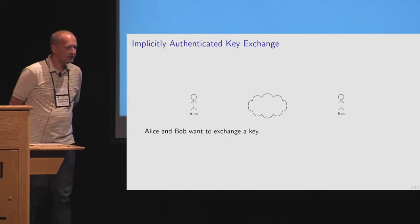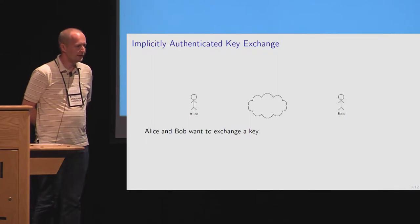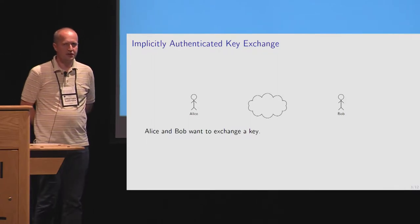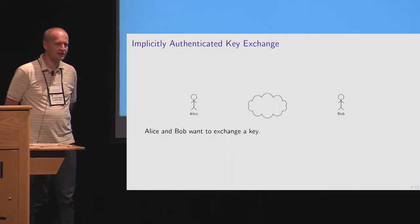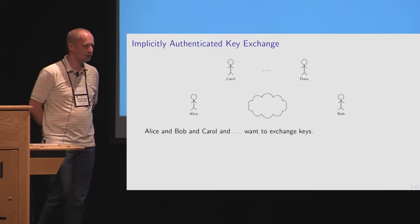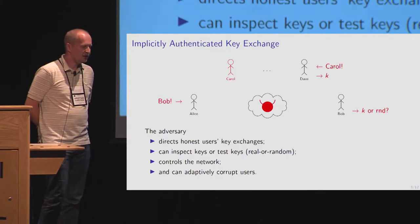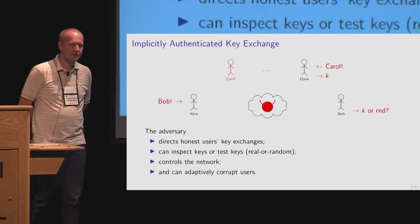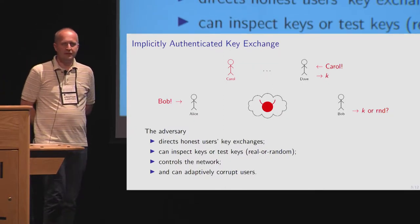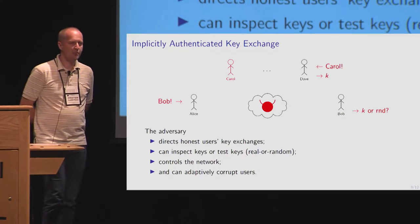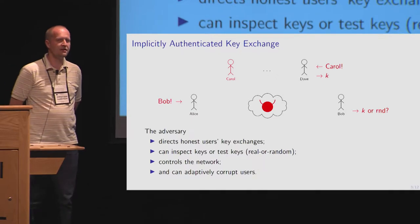The thing we're talking about is implicitly authenticated key exchange. Alice and Bob want to exchange a key, but in this model we don't want to limit ourselves to just two people — we want lots of people who can do many key exchanges between many different people. The adversary is the one that schedules all these key exchanges, which gives him more power. If we can prove security against more powerful adversaries, we have more security.